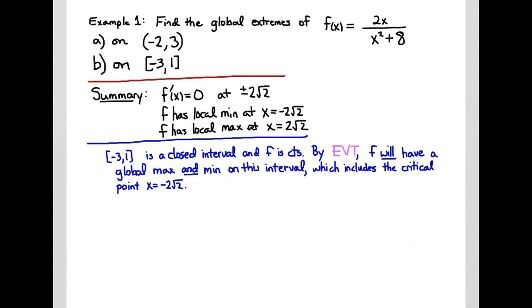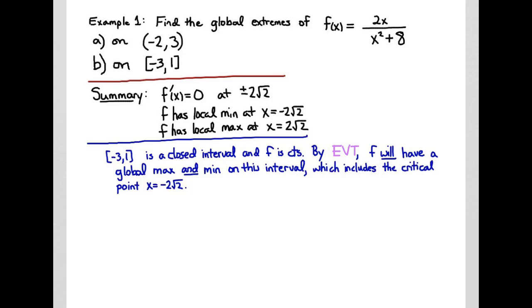Now we're ready to look at the second interval. Our second interval is the closed interval from -3 to 1. Our function is continuous. In the previous example, we found where the denominator equals zero, and there were no solutions. This function is continuous everywhere. So by the extreme value theorem, we know that f is guaranteed to have both a global maximum and a minimum on this interval. Our interval this time only involves the local minimum at -2√2.